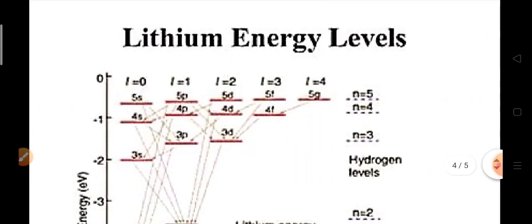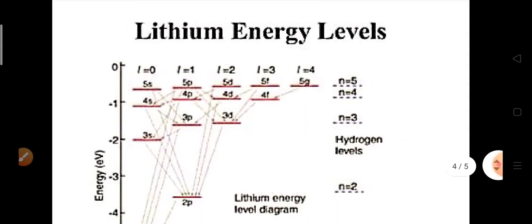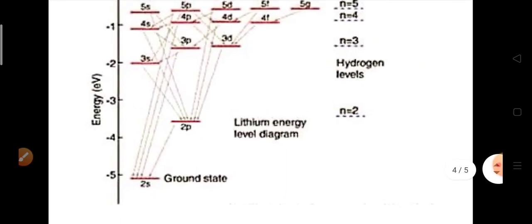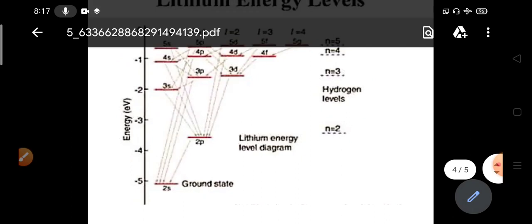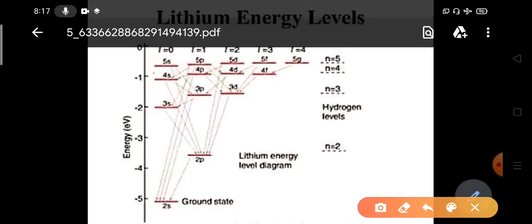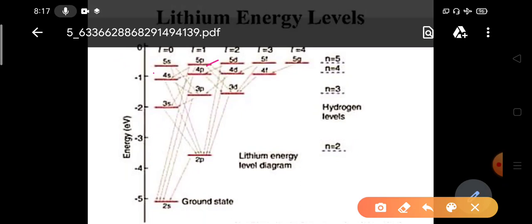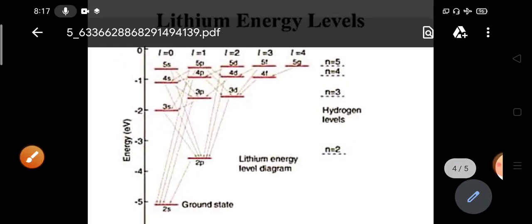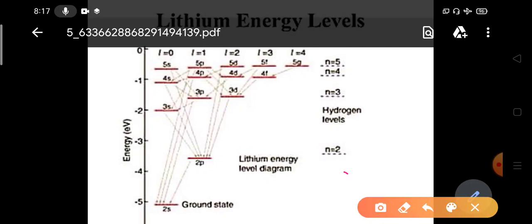Now we look for some energy labels of the alkali atoms and their spectrums. Look here, this is a lithium energy labels. L equals to 0, 1, 2, 3, they have divided by certain columns. This is the 2S state because this is 1S2, 2S1. 2S state is the ground state and since S state has L equals to 0, only 2S is only one energy label.